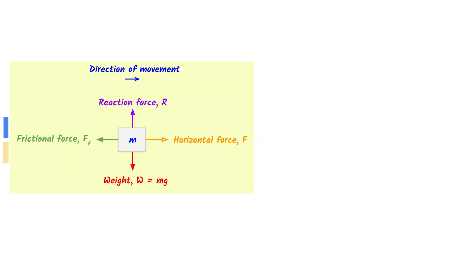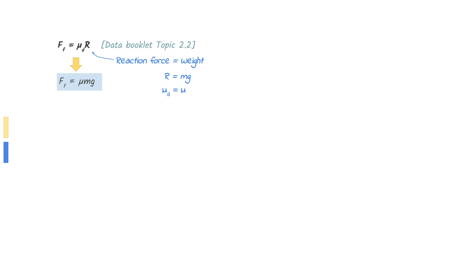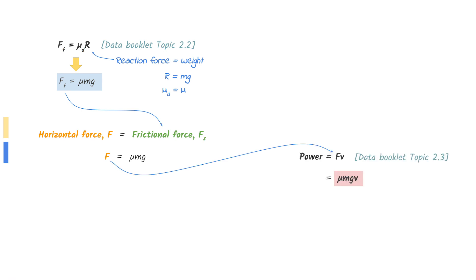Here is a free body diagram of the moving mass. The key word here is constant velocity. If the velocity is constant, then the change in velocity is zero, which means acceleration is zero, which means resultant force is zero. Since the resultant force is zero for both horizontal and vertical components, the horizontal force equals the frictional force and the reaction force equals the weight. Use the data booklet to find the equation for frictional force, substitute in the reaction force for weight, and since horizontal force equals mu mg, substitute the force into the power equation given in the data booklet to find your answer.